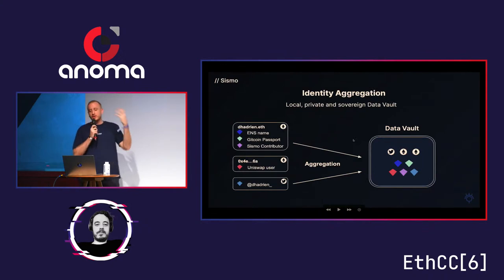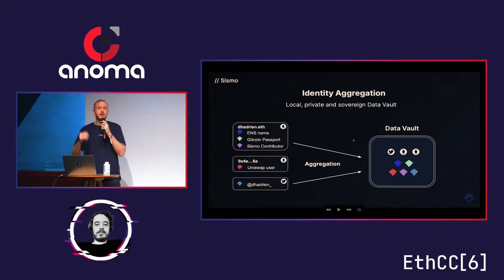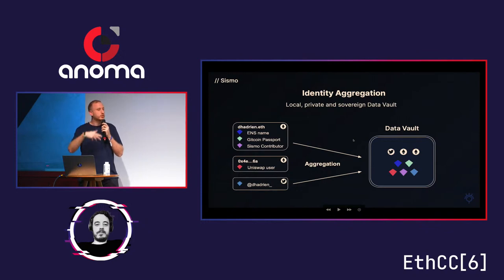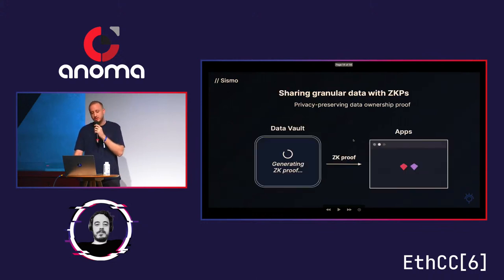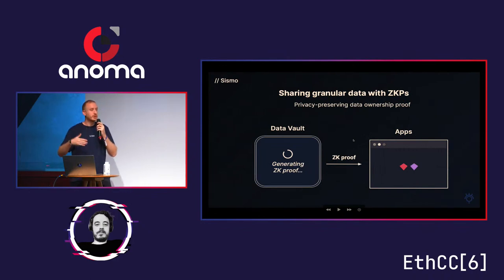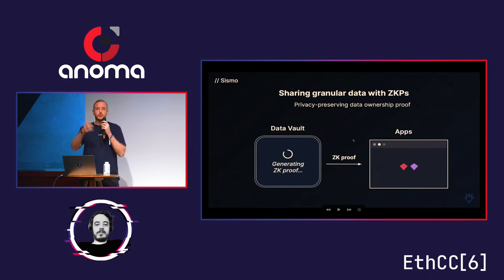First, there's identity aggregation. In Sysmo you have what we call a data vault — it's like an identity wallet — on which you aggregate all your accounts: your wallets, your Twitter, your GitHub, your Telegram. Once imported in your vault, you can generate ZK proofs of granular data from those identities. The ZK proof is sent to an app that verifies it and is convinced: this person is an NFT owner of a Noun, this person voted in a DAO, and so on.